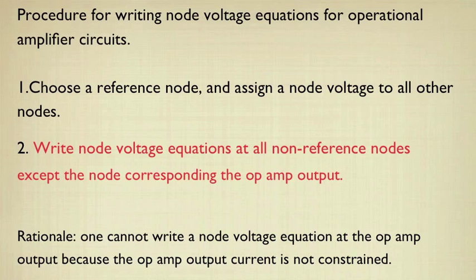And the second step is to write node voltage equations at the non-reference nodes, except, and this is for the op-amp now, except for the node corresponding to the op-amp output. What's wrong with that node? Well, the op-amp current is not constrained by an element constraint, so certainly one can write KCL at the node, but it won't result in a useful node voltage equation because we can't relate the op-amp current to either the node voltage values or to a specific numerical value.